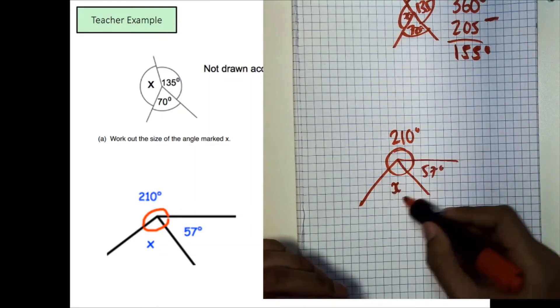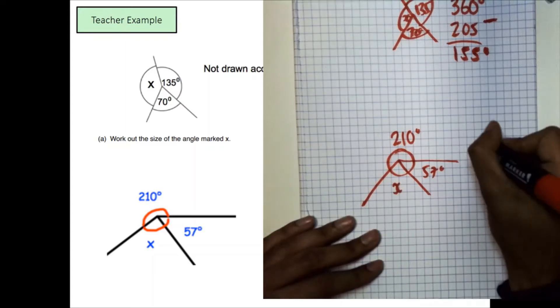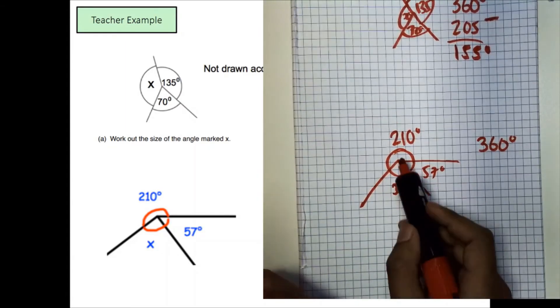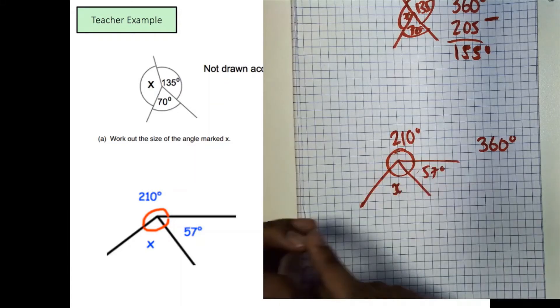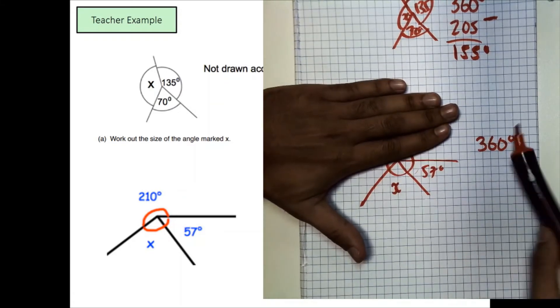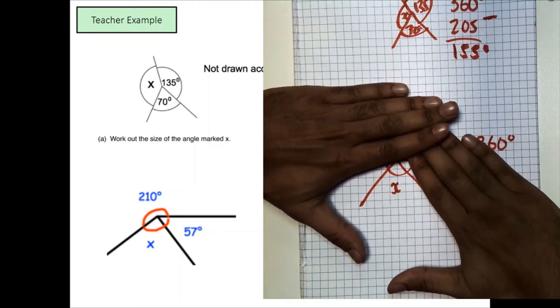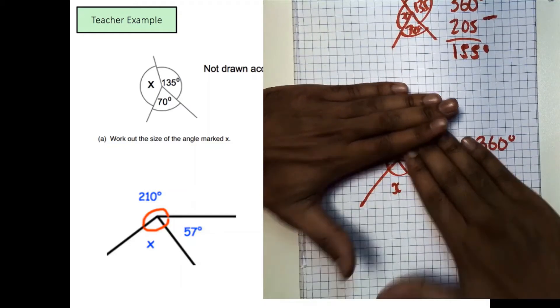Similarly now, remember this is still a whole point, isn't it? So it's going to be a total of 360 degrees. Now in this whole point, if we were to take away 210 from this point and we were to take away 57 from this point, look what we're left with. We're left with just x, exactly what we want.